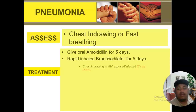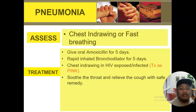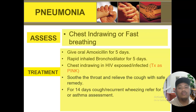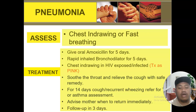If the child has chest indrawing and is a child with HIV exposure or is HIV-positive, treat the condition accordingly. Soothe the throat by letting the child drink or breastfeed with a safe remedy. If the cough continues for more than 14 days, consider assessing the child for asthma. Advise the mother when to return immediately — when danger signs are present. If no danger signs appear, advise the mother to follow up in two to three days.